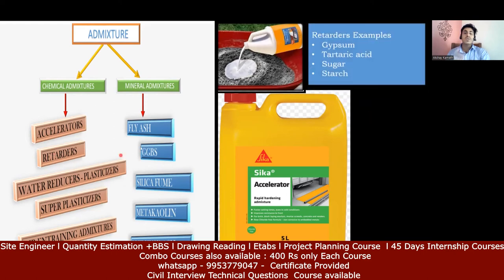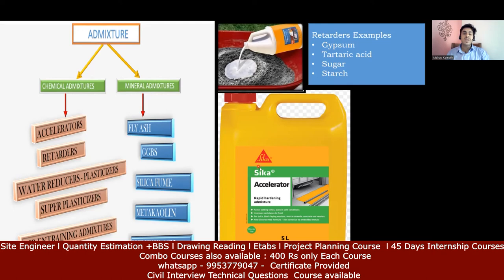They may also ask you to name some retarders. You can say sugar — a certain amount of sugar added to concrete delays the setting. Gypsum is also a good example; during cement manufacturing, gypsum is added to delay the setting, so it acts as a retarder. Tartaric acid is another example, and starch as well. For accelerators, Sika is a very good brand that manufactures all kinds of accelerators — rapid hardening admixtures are used. Try to remember these examples to give better answers; basic understanding is what counts at the interview level.